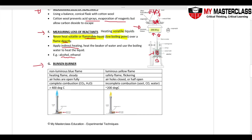For the Bunsen burner: when the air hole is fully open, this is the heating flame. Full oxygen intake allows complete combustion, producing carbon dioxide and water vapor. This gives a steady, pale blue non-luminous flame. The temperature reaches more than 400 degrees Celsius.